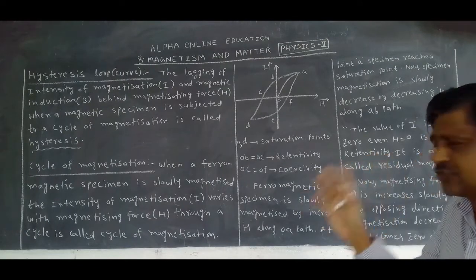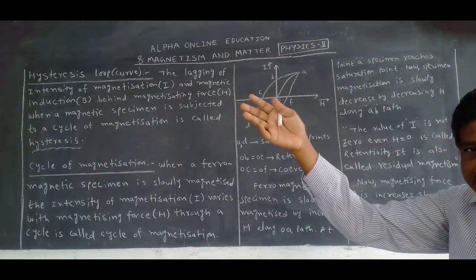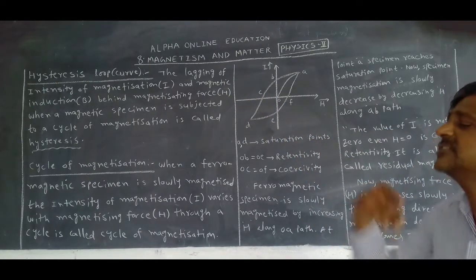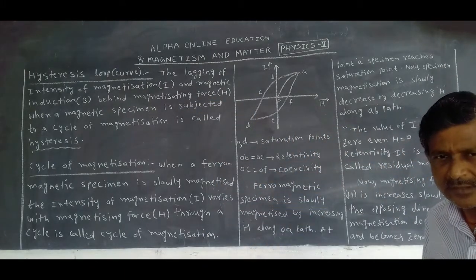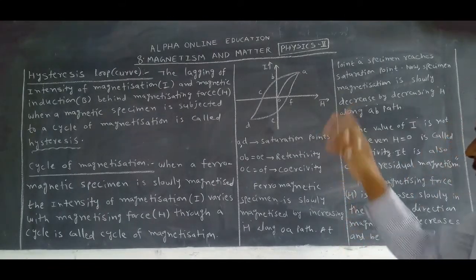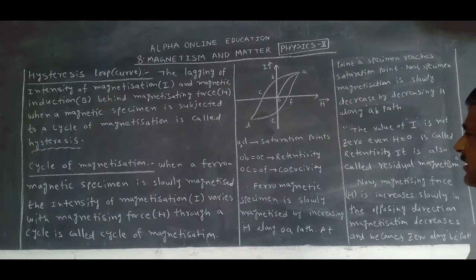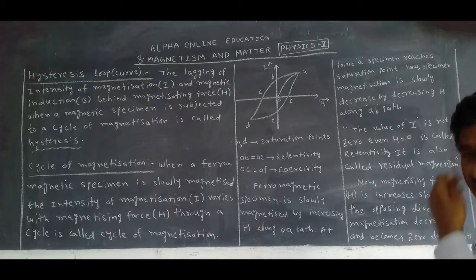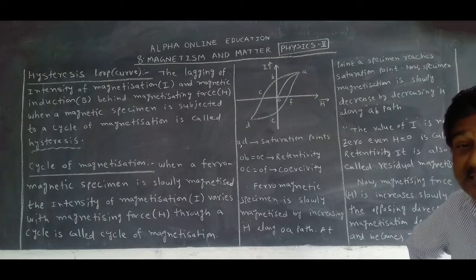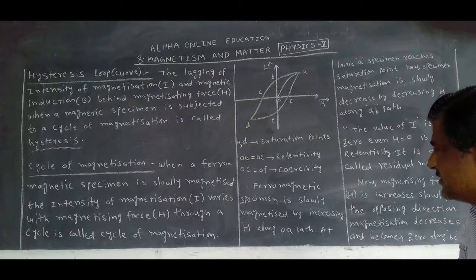H is advanced, while B or I is behind or back - one is fast, another one is back. The lagging of intensity of magnetization I and magnetic induction B behind magnetizing force H, when a magnetic specimen is subjected to a cycle of magnetization, is called hysteresis.